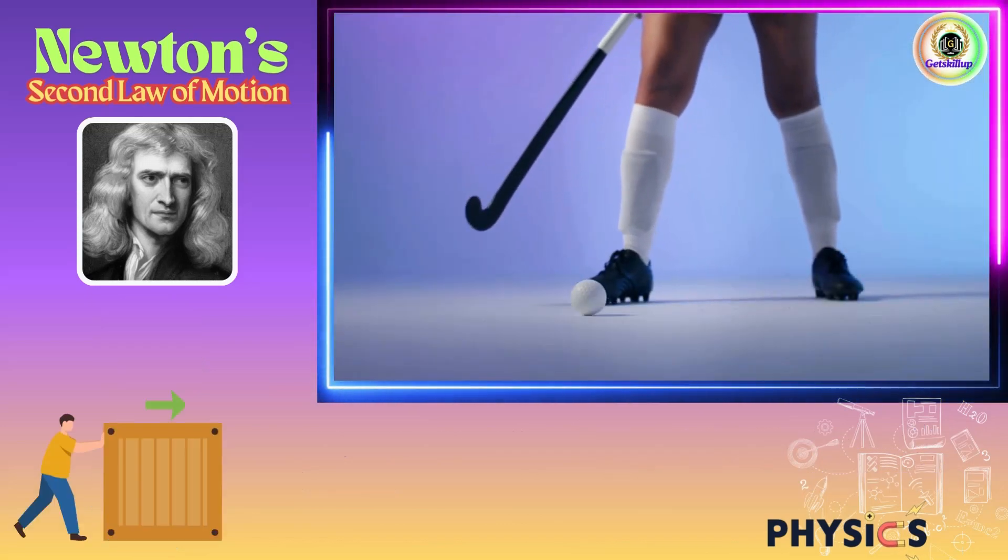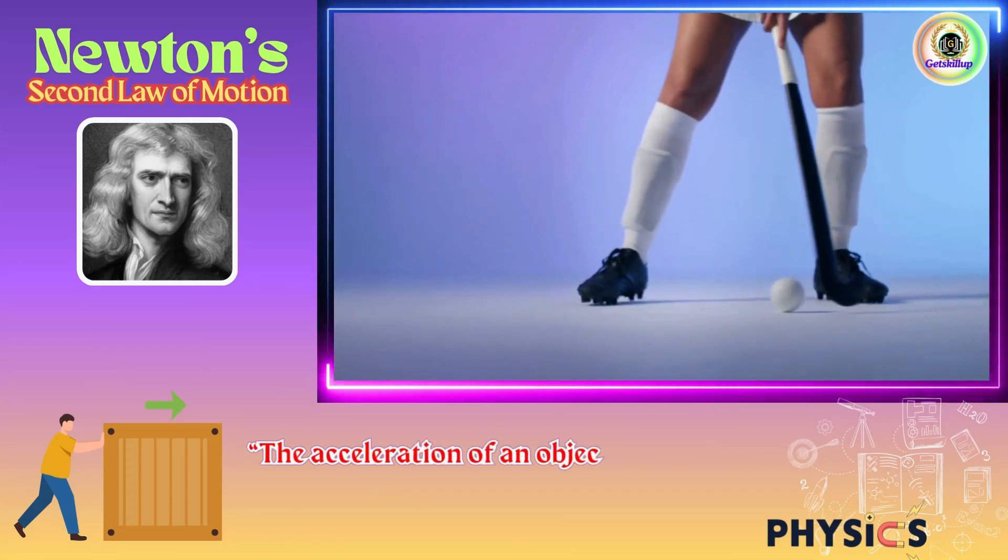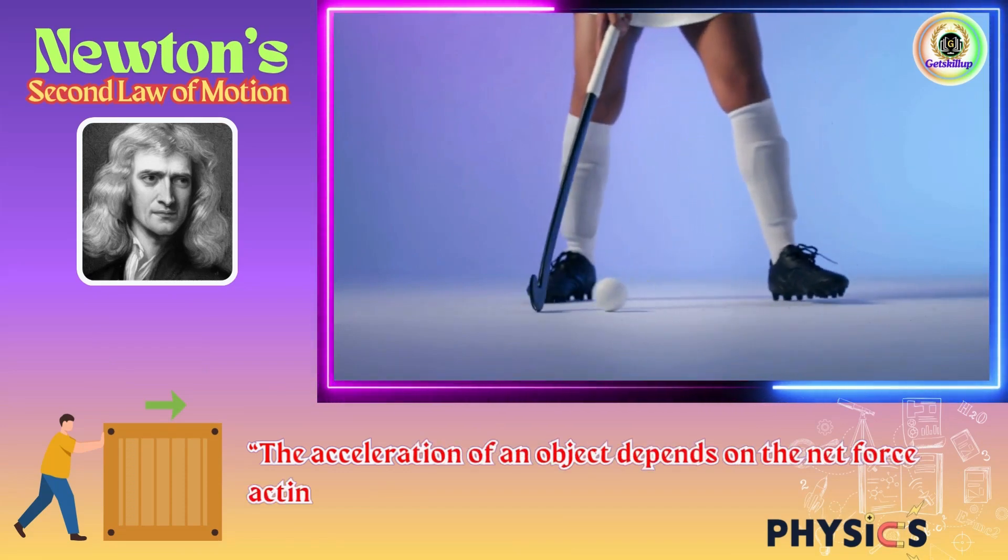Newton's second law of motion definition: The acceleration of an object depends on the net force acting on it and the mass of the object.